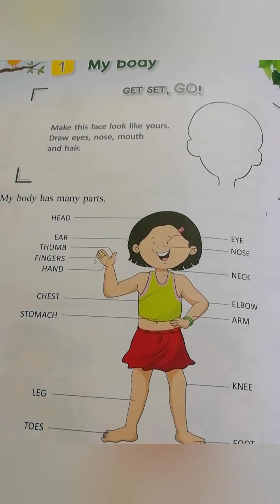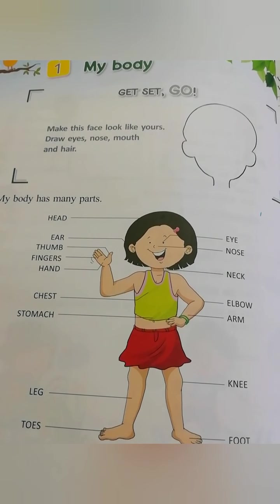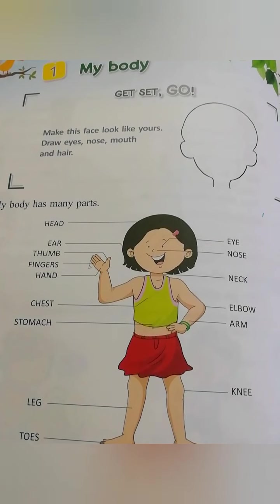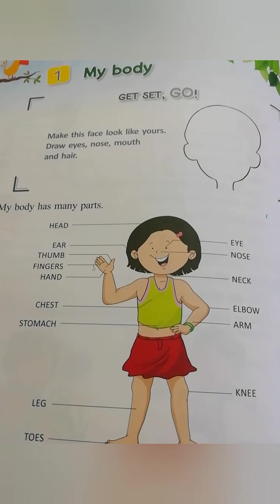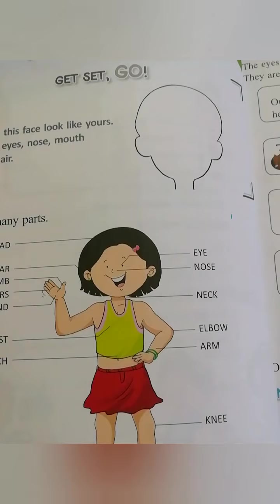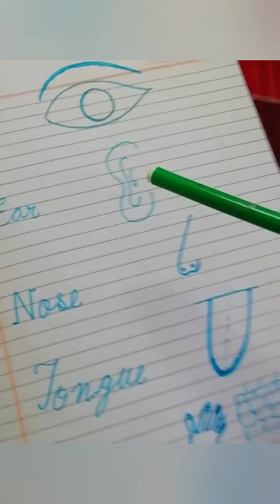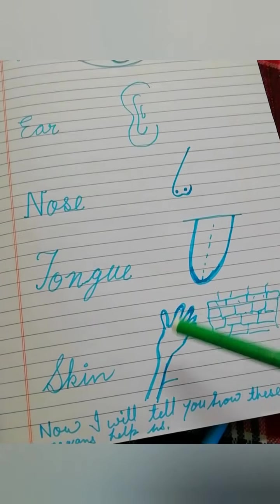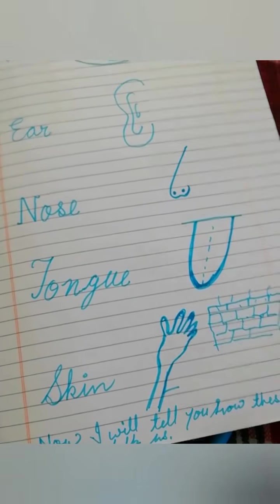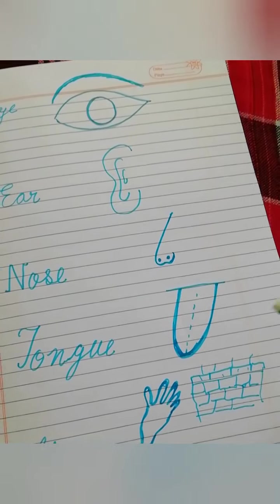Children, do you know our body is the most amazing machine? And how do we know what is happening around us? Because we have five friends. Do you know what are these? These are eye, ear, nose, tongue and our skin. These are our five friends. These help us to know what is happening around the world.